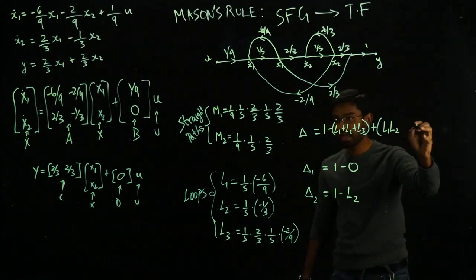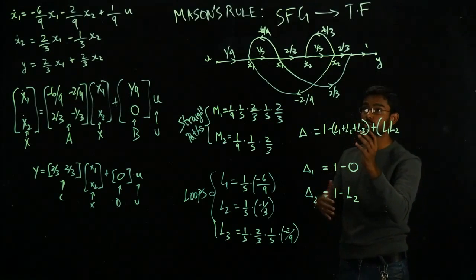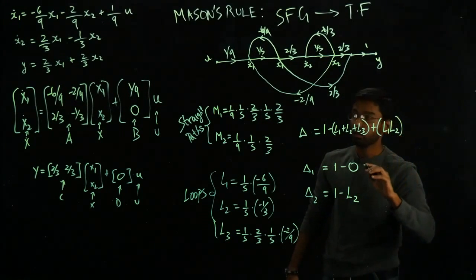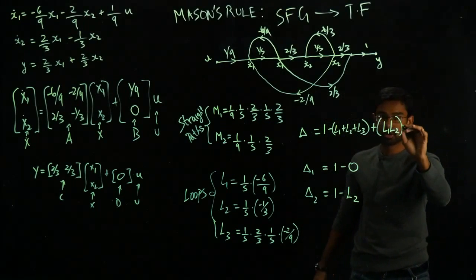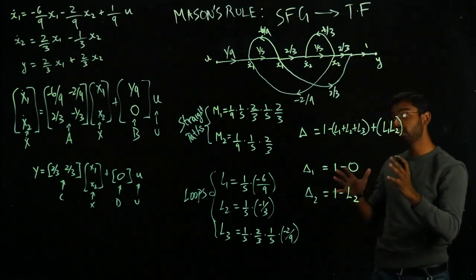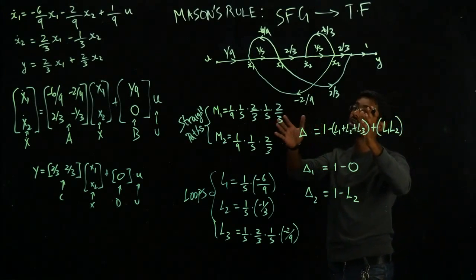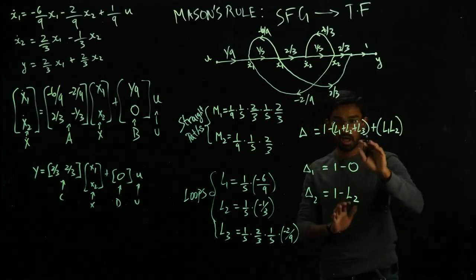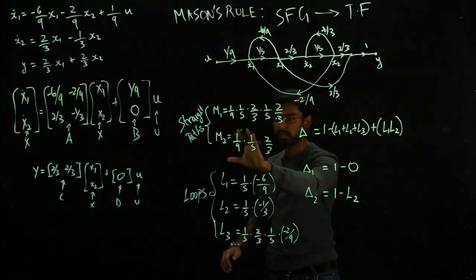So I'm going to write that product, L1 and L2. Of course, I will keep adding if at all I had more loops, two loops that are not touching each other. But I don't. So I will stop here. This actually keeps going. I could have a minus and consider three loops that are not touching each other. But we do not have a complicated signal flow graph that actually asks for it. So I can stop right here and look at these variables.